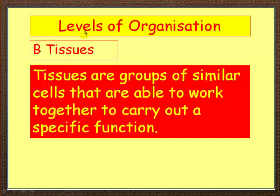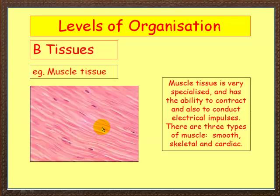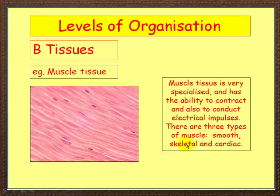The next step up in terms of organization from the cell is tissues. Tissues are groups of similar cells that work together to carry out a specific function. An example is muscle tissue, which consists of very specialized muscle cells that have the ability to contract and conduct electrical impulses. There are three types of muscle: smooth, skeletal, and cardiac — around the heart.